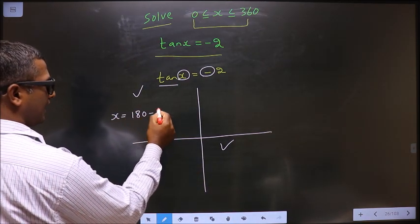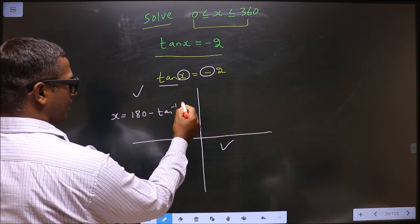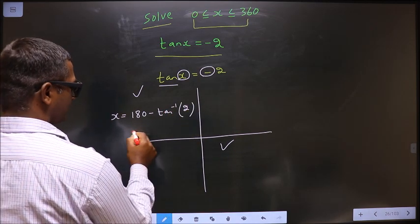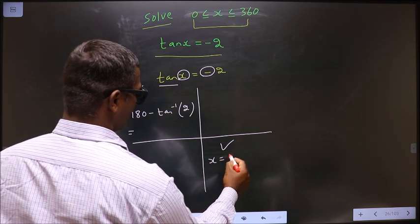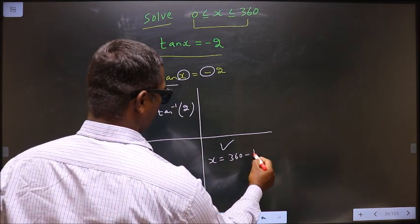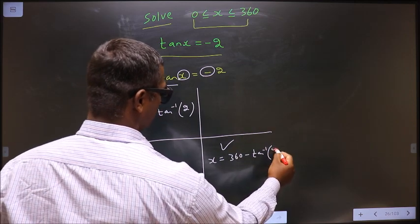To get an angle in the second, we should do 180 minus tan inverse 2. To get an angle in the fourth, we should do 360 minus tan inverse of this 2.